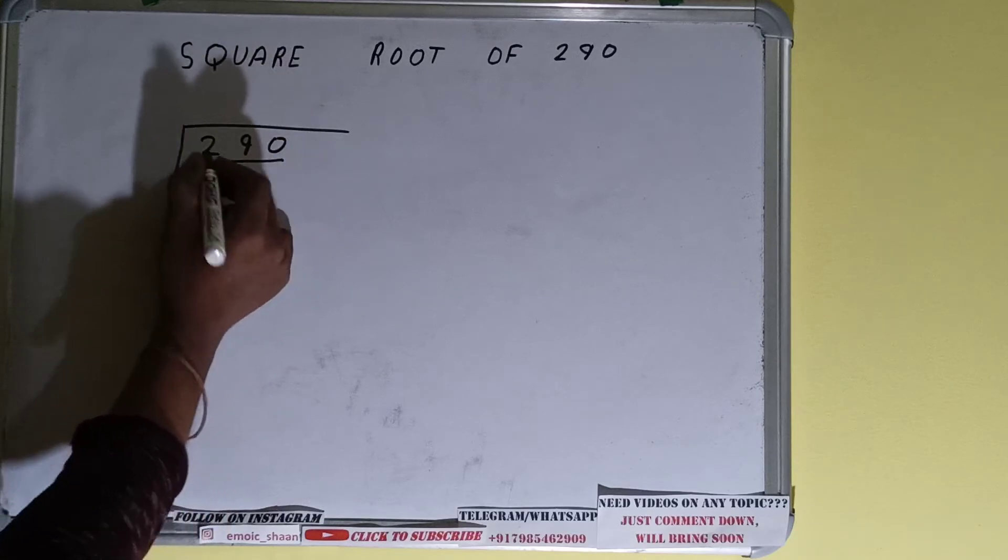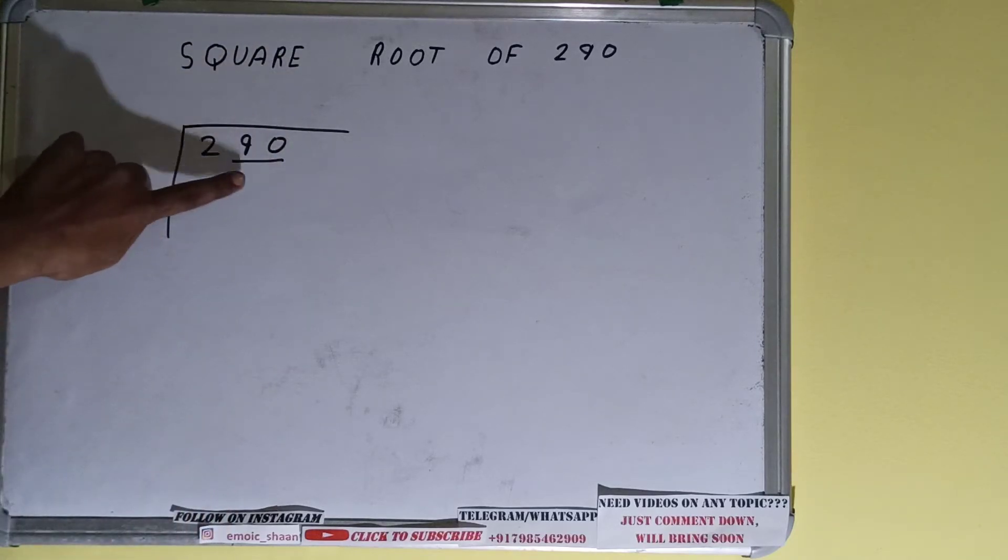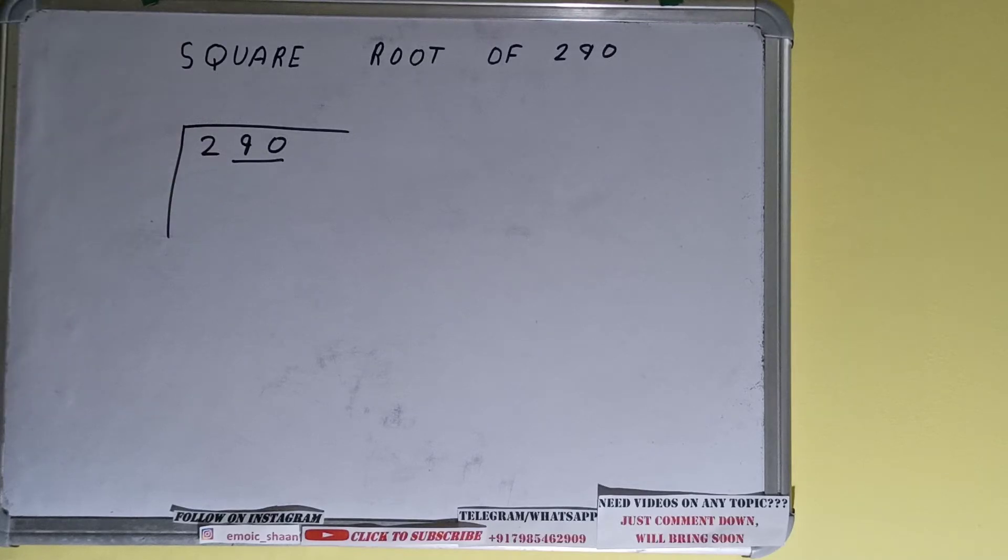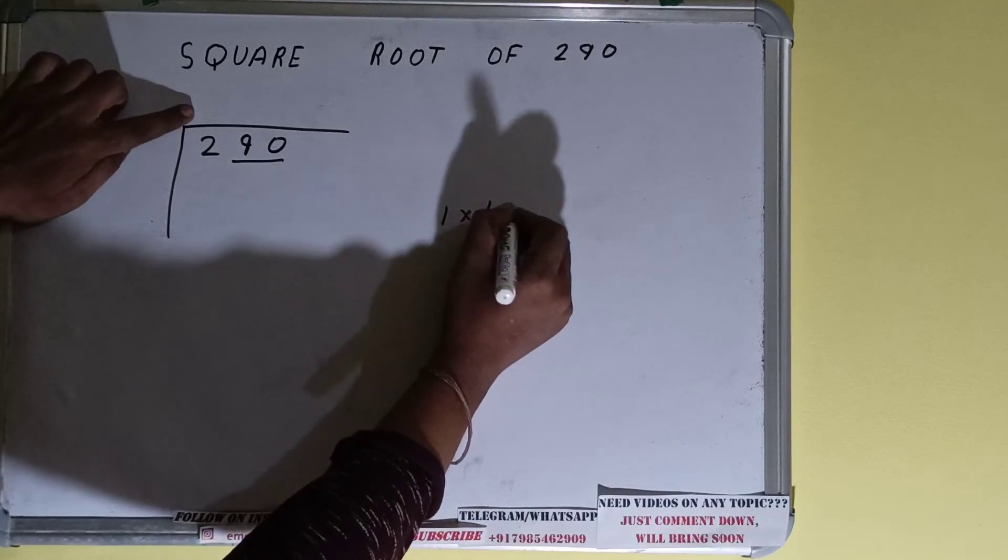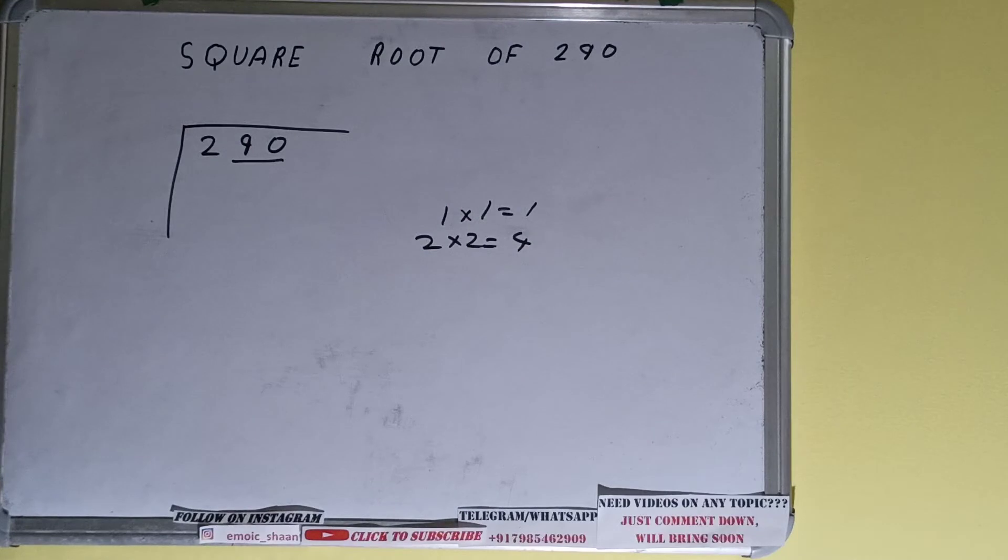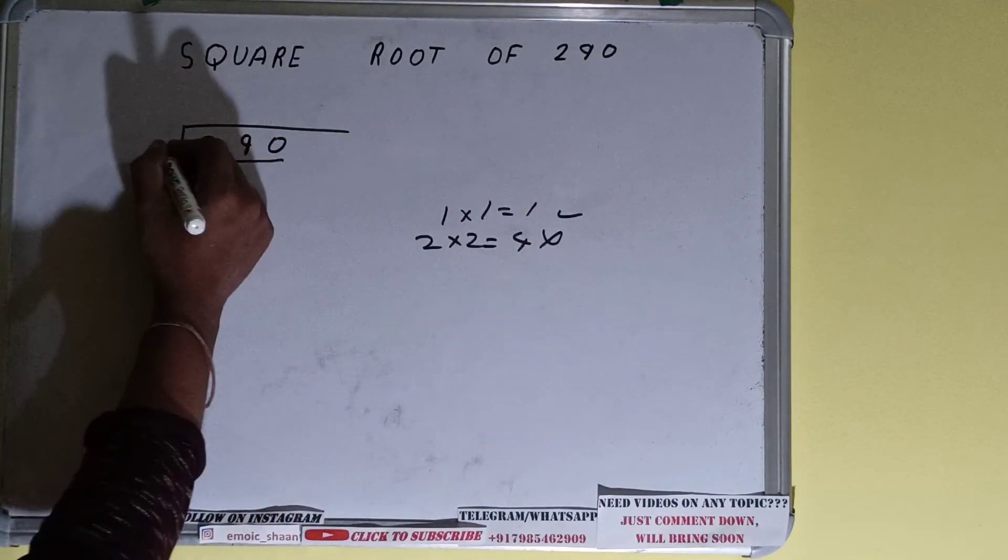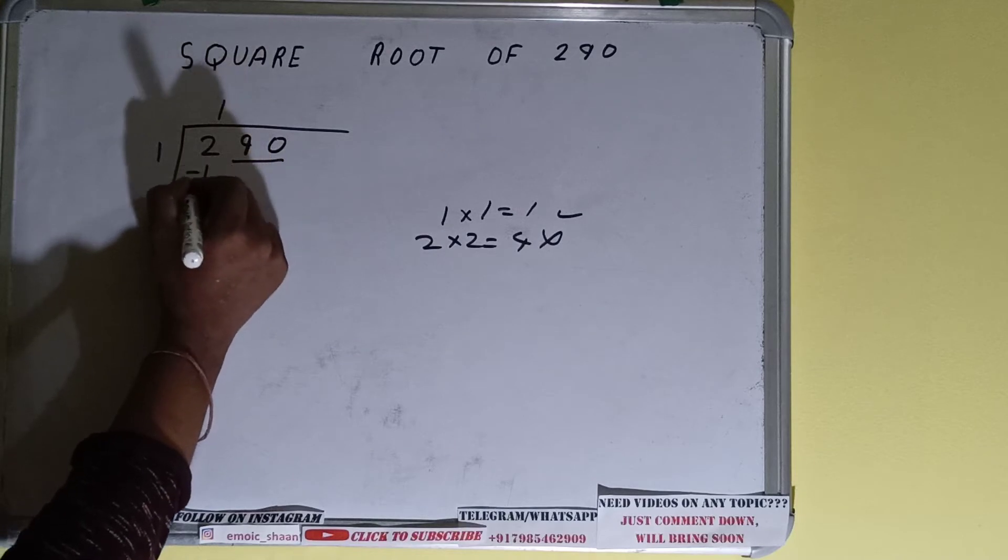So only one pair can be formed and this two will be left out. So first we'll divide this two and then we'll bring down numbers in pair. The rule is whatever number we write here we have to write here also. So if we write one here and one here it will give one. If we write two here and two it will give four. Now four we cannot use because it is greater than two so we have to go with this one.